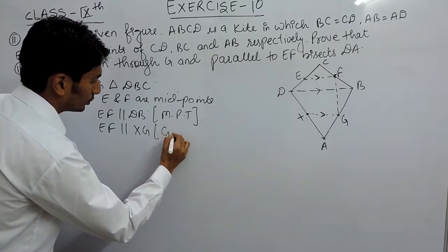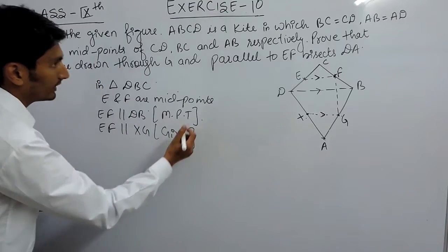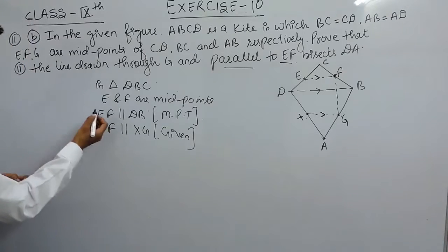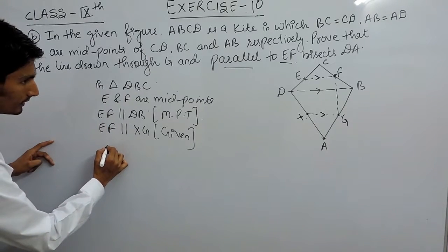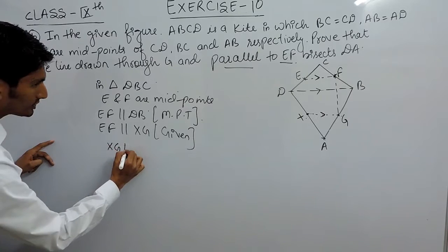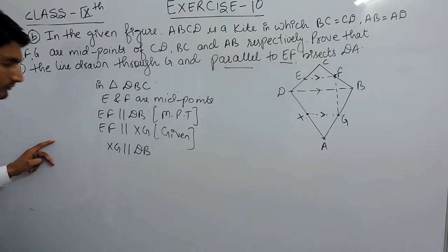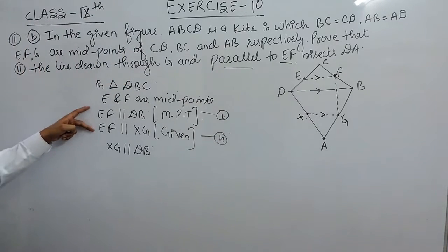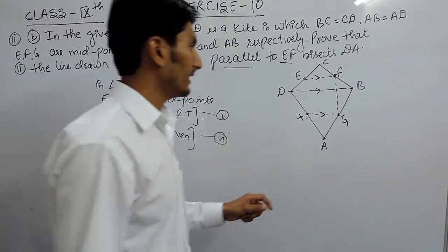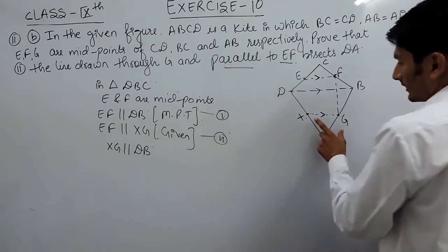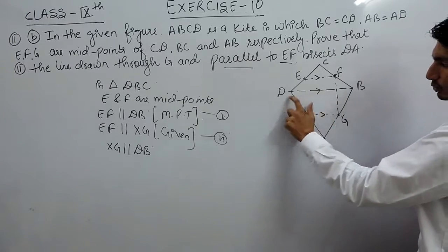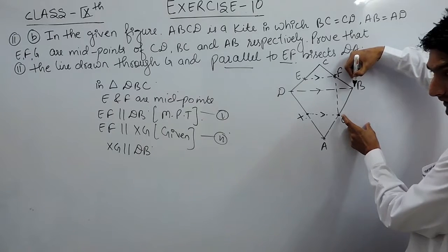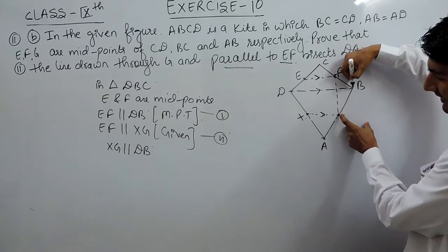Since EF is parallel to DB, and EF is parallel to XG — this is given, as it says the line through G is parallel to EF — by these two equations we can conclude that XG must be parallel to DB. From equation one and equation two, I have concluded that XG is parallel to DB.